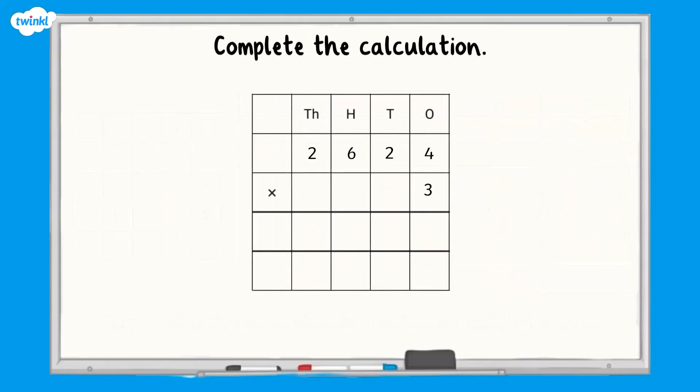Now it's your turn. Complete the calculation two thousand, six hundred and twenty-four multiplied by three. Use counters to help if you need to.